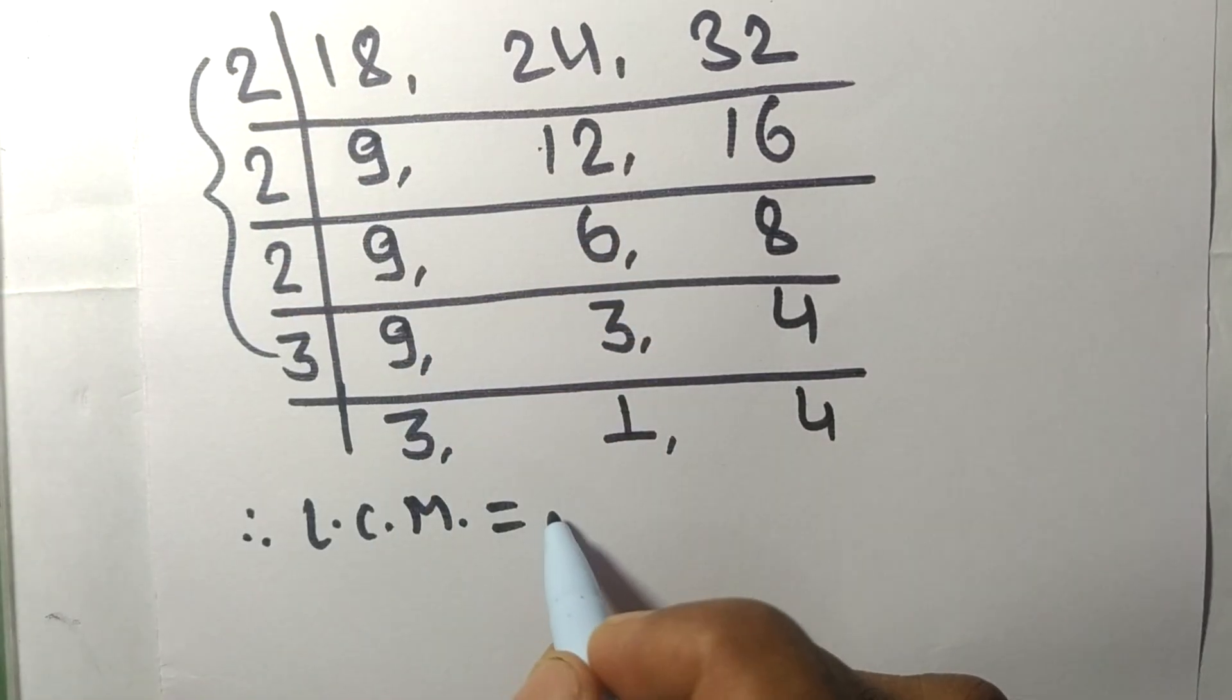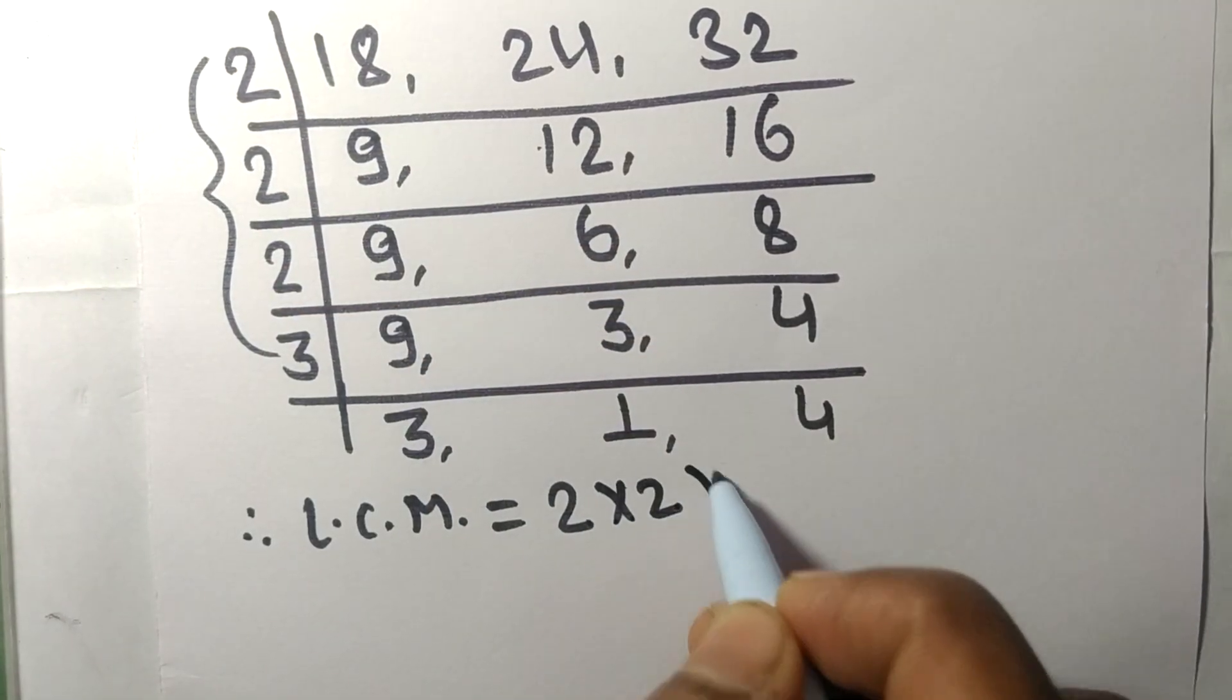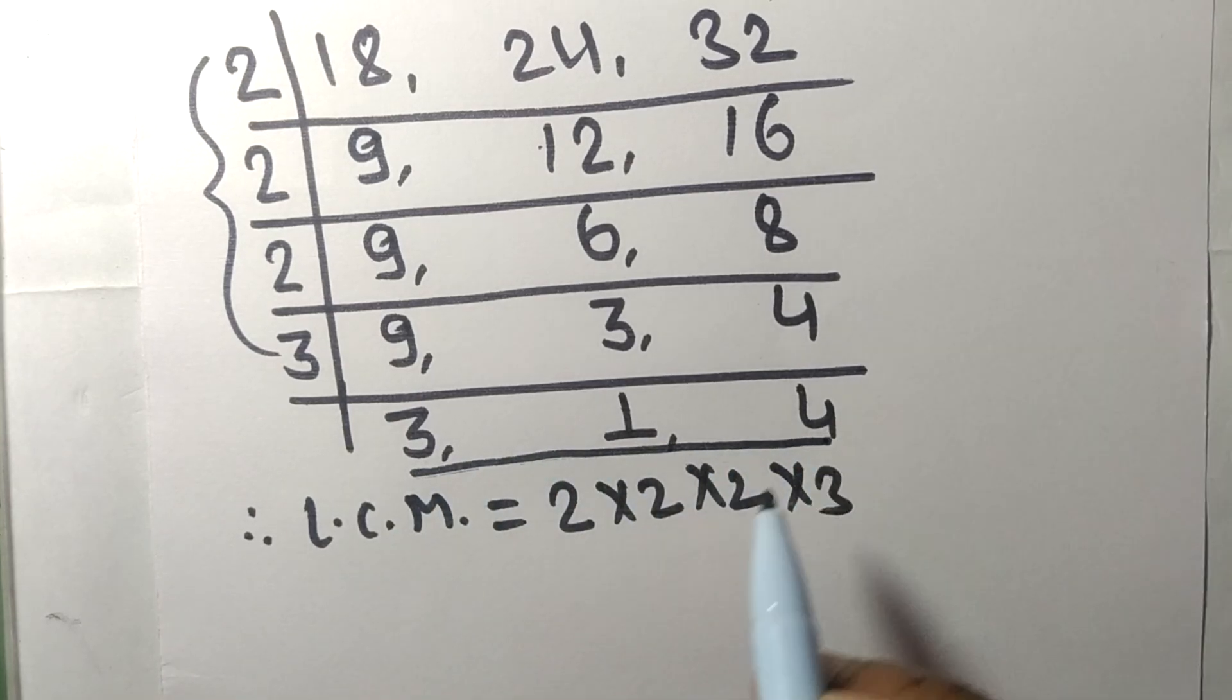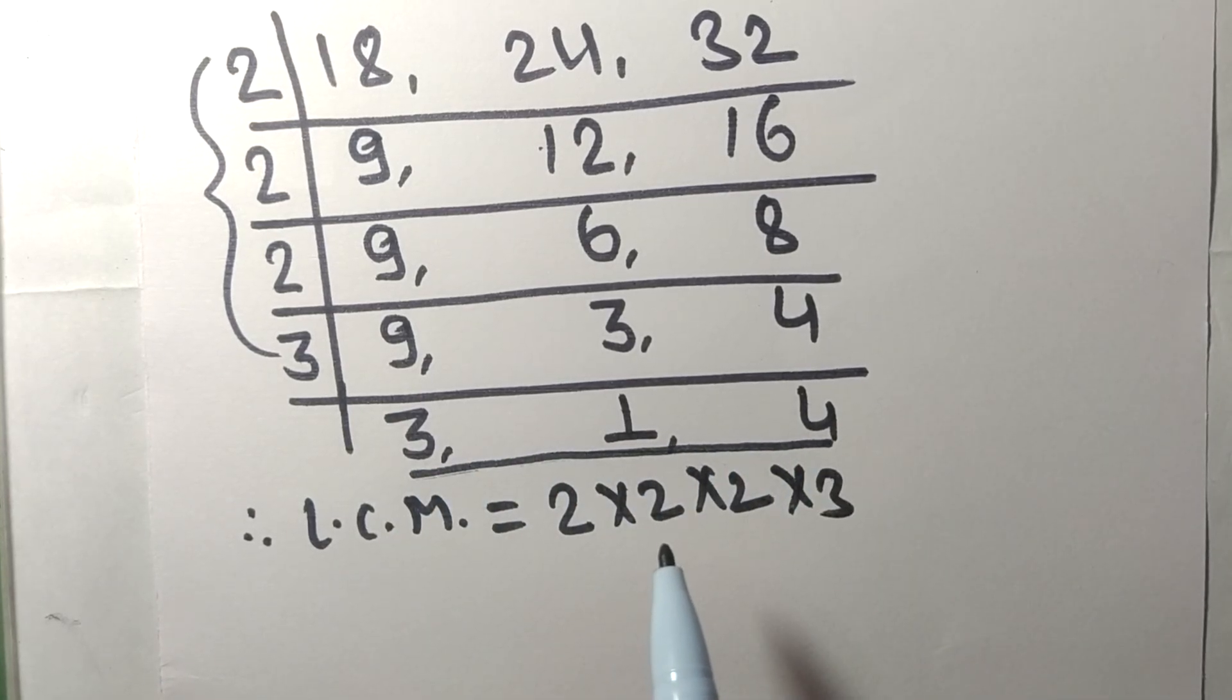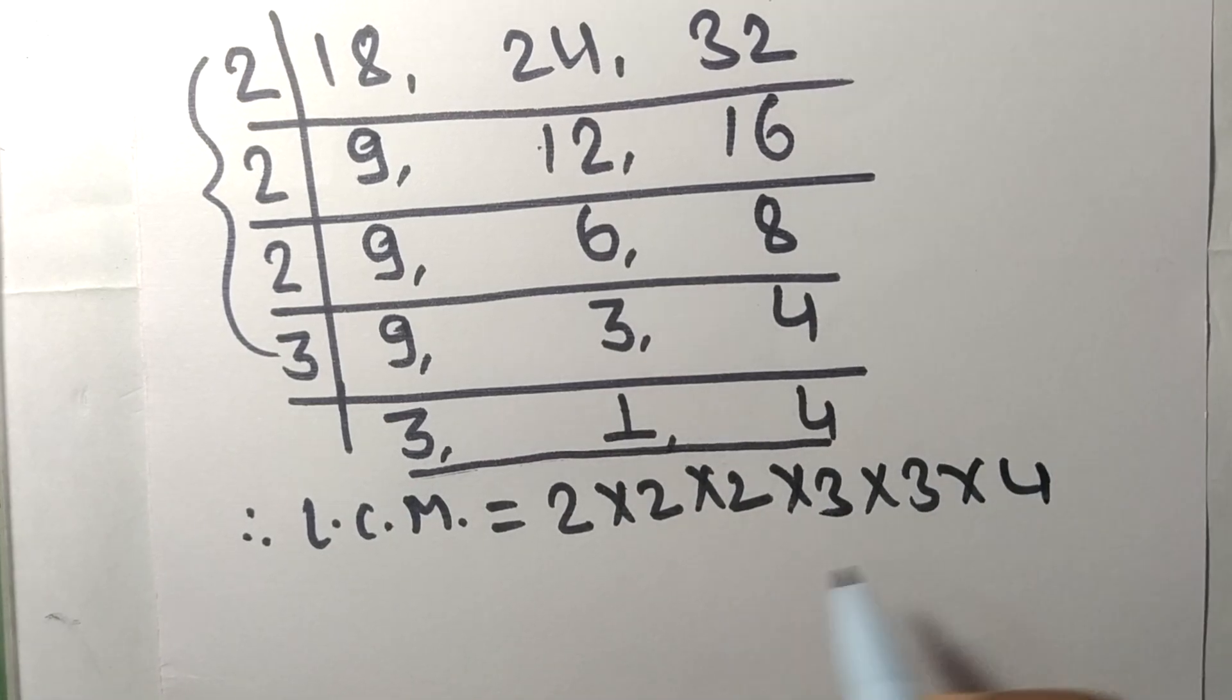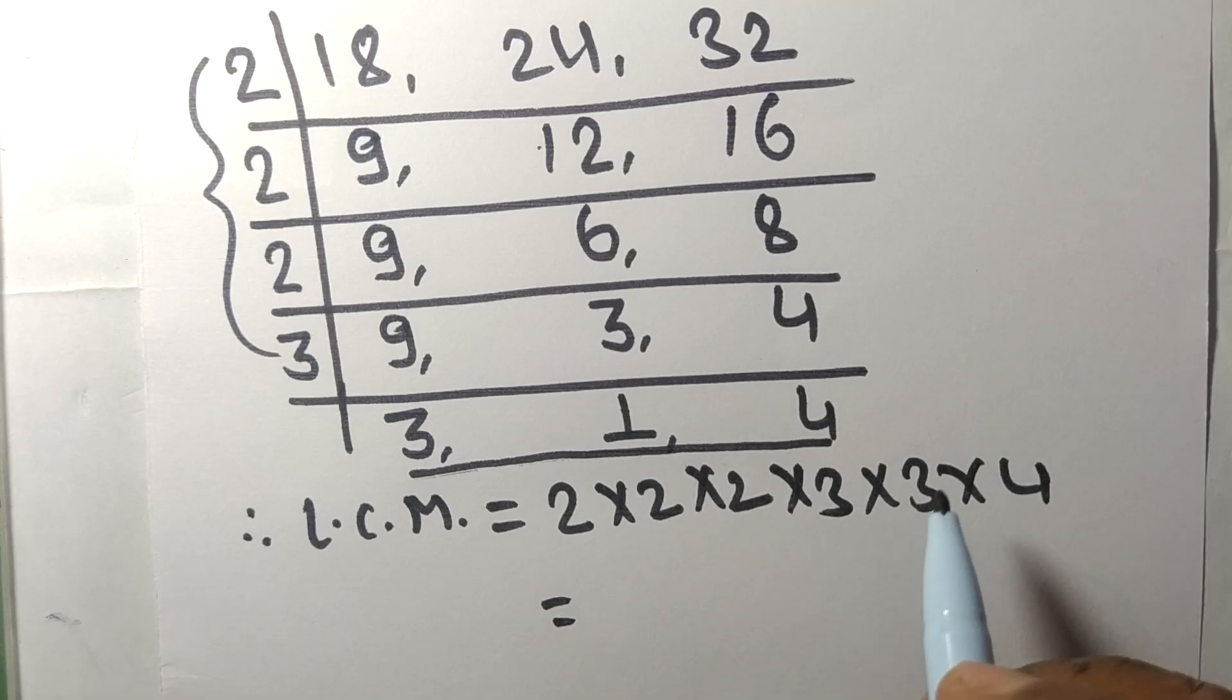From this side it is 2 times 2 times 2 times 3, and from this side we choose the numbers greater than 1, that is 3 and 4. Multiplied by 3 and 4. By multiplying all these numbers we get 288.